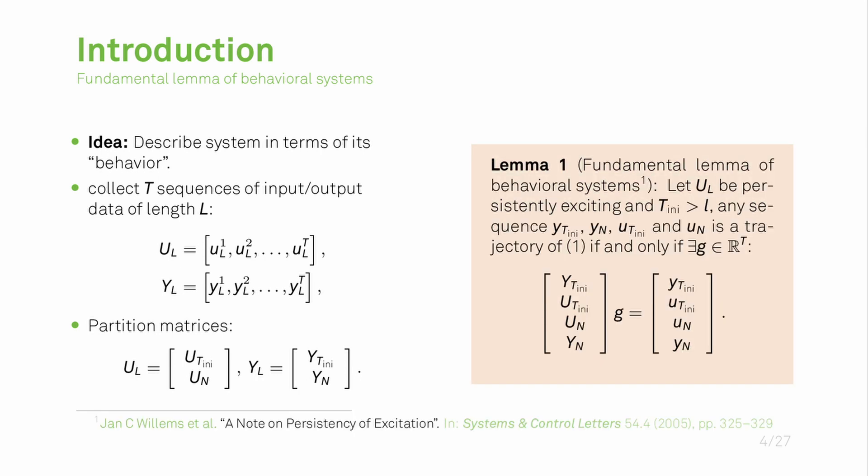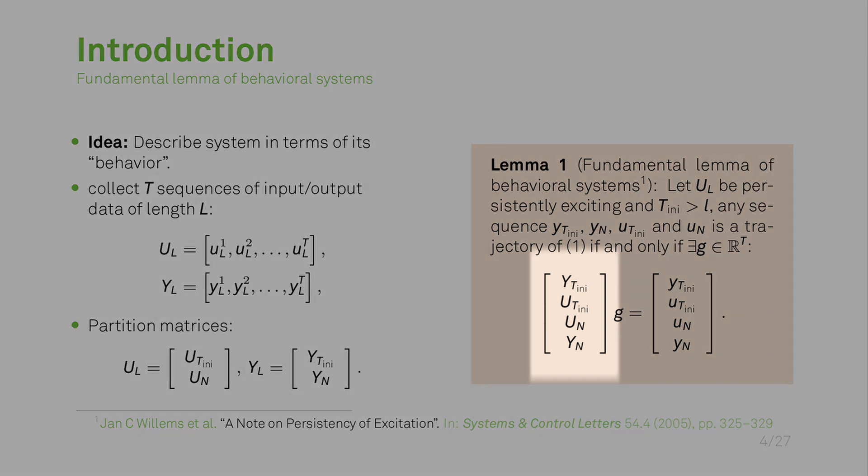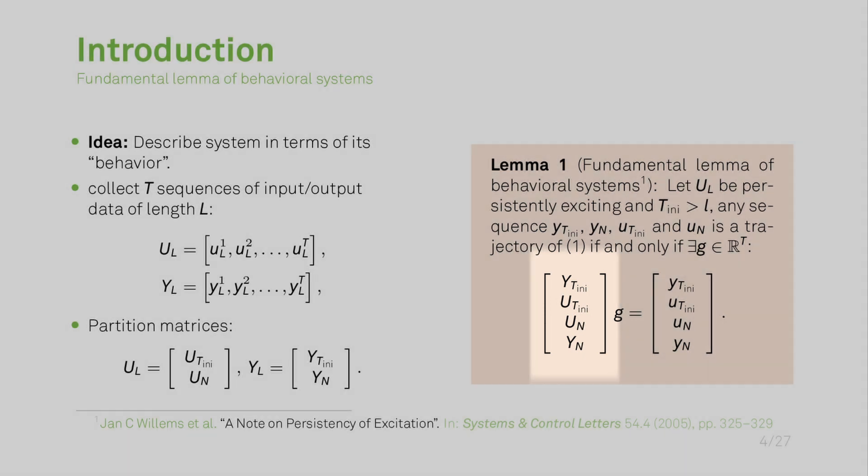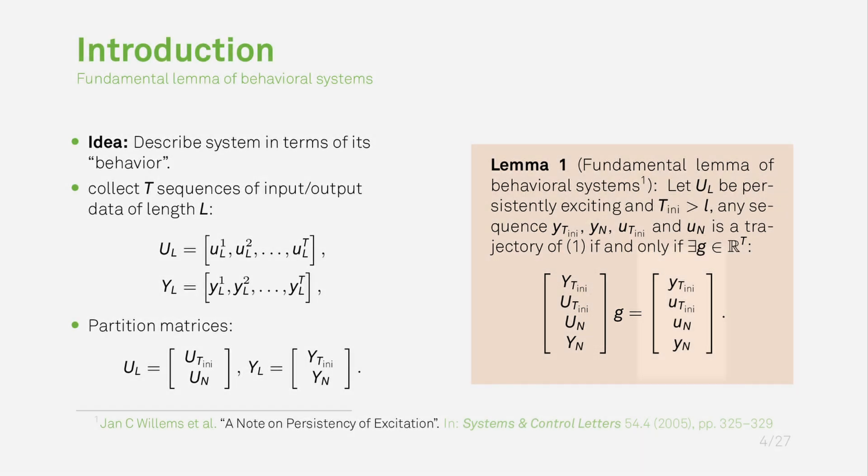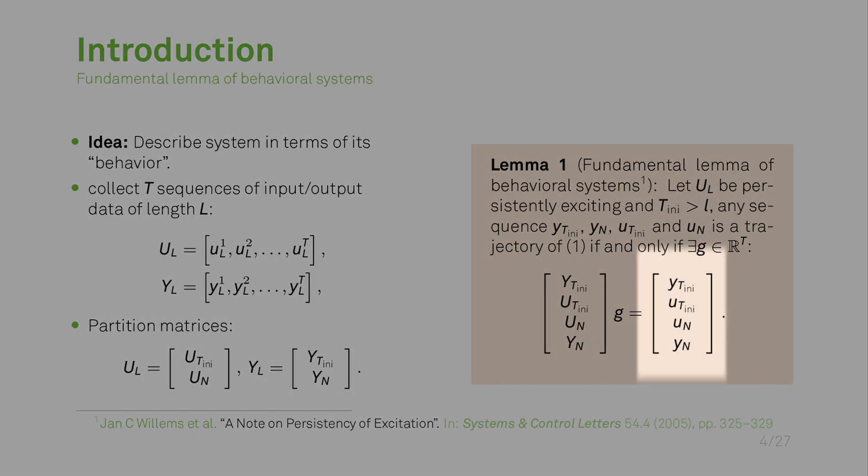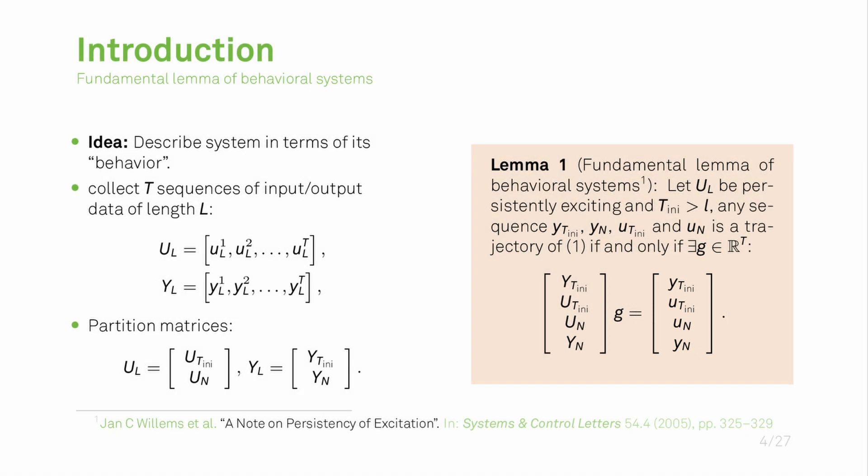If we have done all of this, we can state the fundamental lemma itself which is given here on the right hand side. Essentially this lemma says that if we take linear combinations of the columns of this matrix with this linear combination factor g, we create a new sequence of the system which is ensured to also belong to the system. This is a very nice and equivalent way to describe a dynamical system.